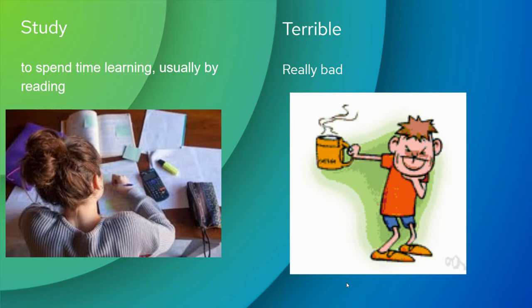Study — that means to spend time learning, usually by reading. Here's a picture of a girl studying, probably math or some kind of science, maybe for a test. Terrible means really bad — and in this picture, it looks like this drink smells really bad or smells terrible.